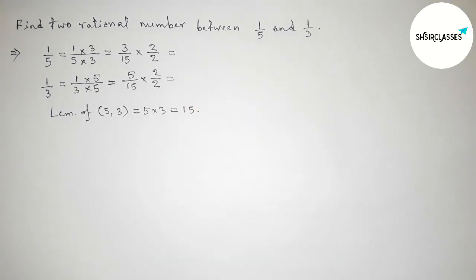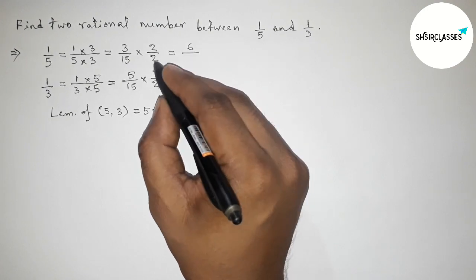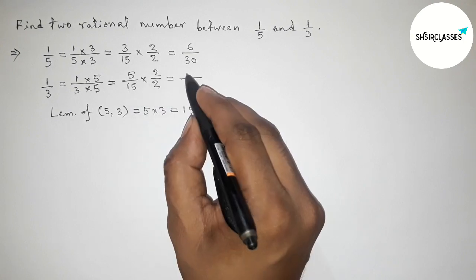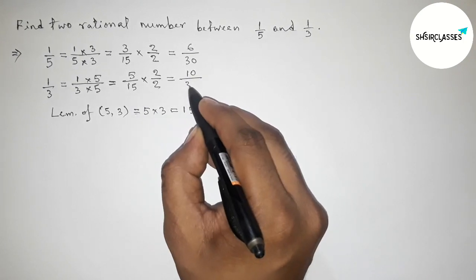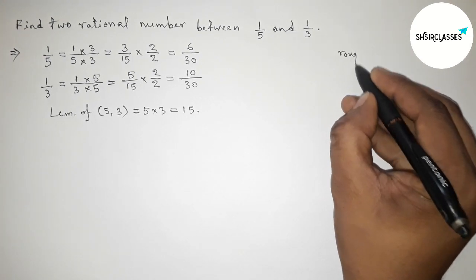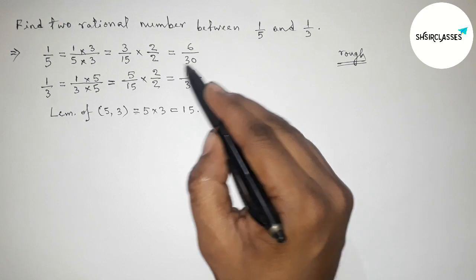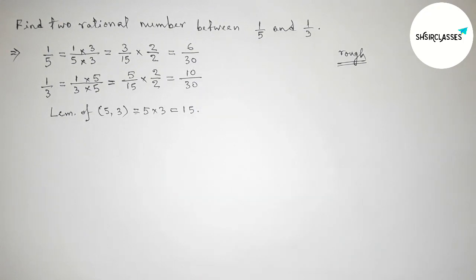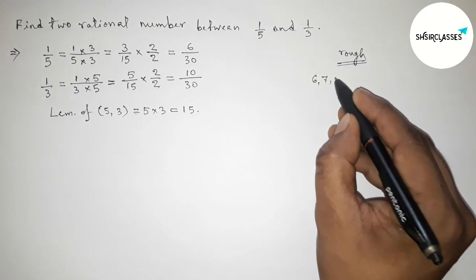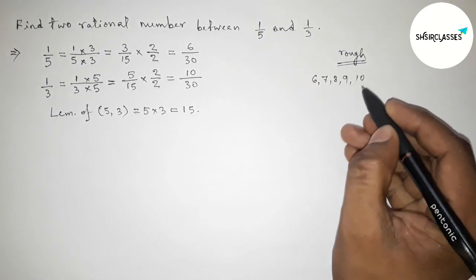Multiplying this, we get 3 times 2 is 6, so this is 6 by 30, and 5 times 2 is 10, so this is 10 by 30. Both denominators are now equal.